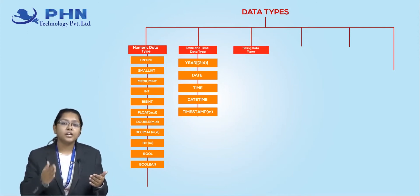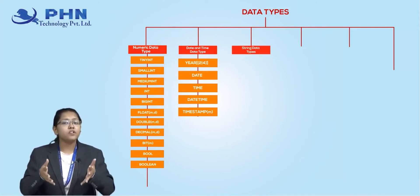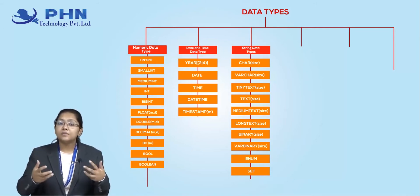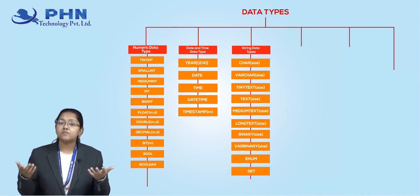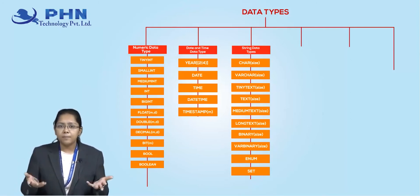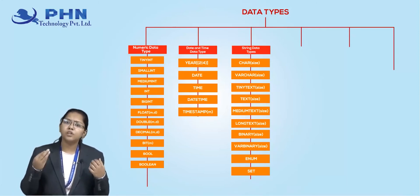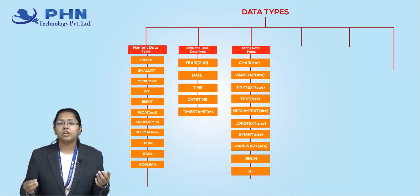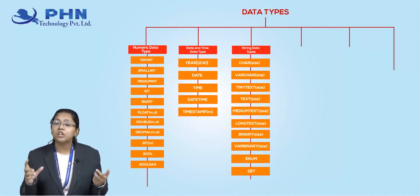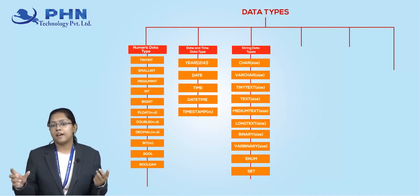There are also string data types. Strings hold names and characters. Data types like varchar and char are types of string data types. All characters, words, and sentences get stored in these types. For example, if you want to store a person's name, that name is a string — a combination of characters. So you would use the varchar data type for that.